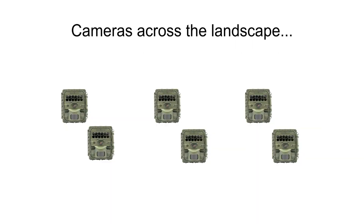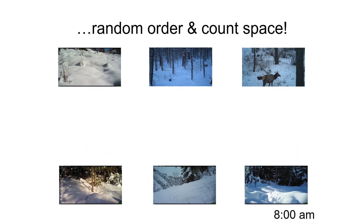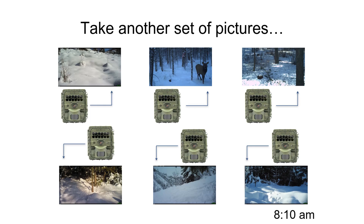So how does this idea work with cameras? We place cameras randomly across the landscape we want to estimate abundance for. Each camera is programmed to take a picture both when its motion sensor is triggered and at a specific time interval throughout the day. We randomly mix up the order in which we look through the cameras, then sequentially look through the pictures taken at that time step until we detect the animal we're looking for. In this example it takes five camera view sheds for us to detect an elk. Since we measure the area of each camera's view shed when deploying it, we can use simple addition to determine the total amount of space we looked at before we found the elk.